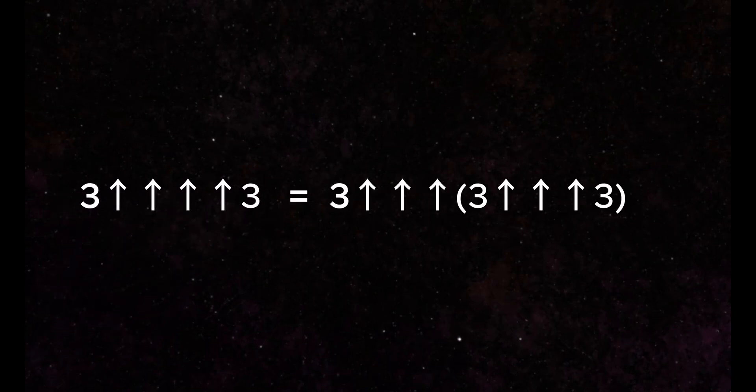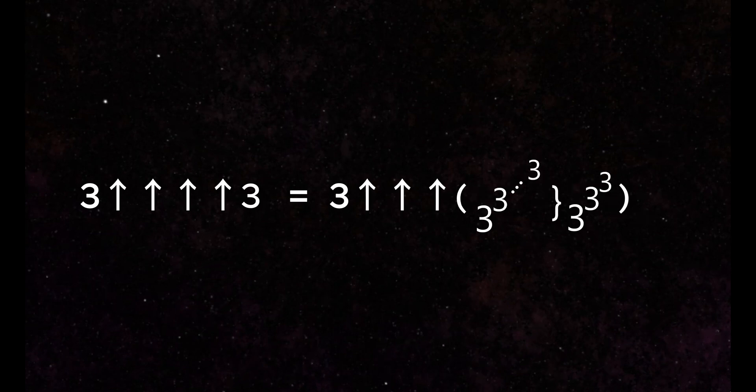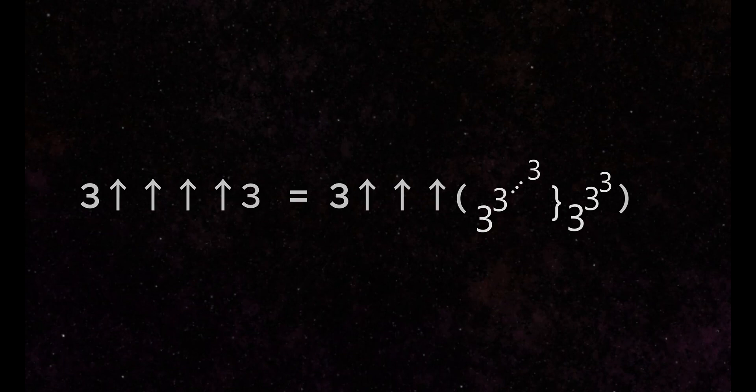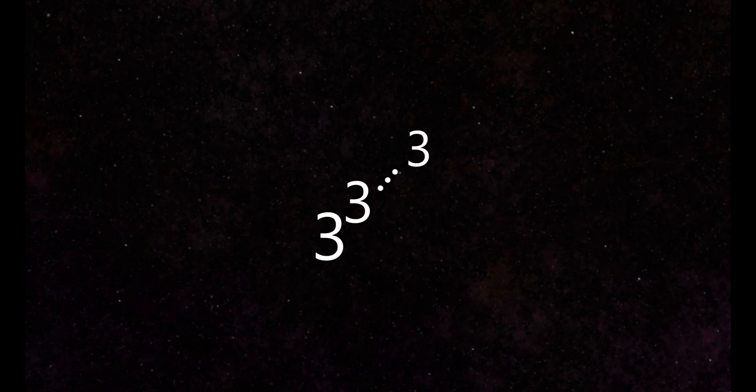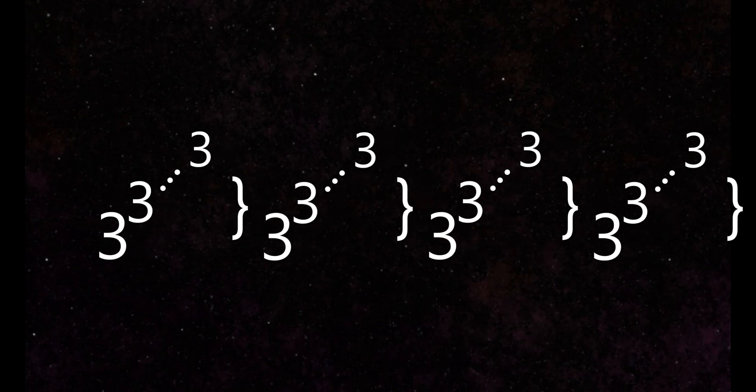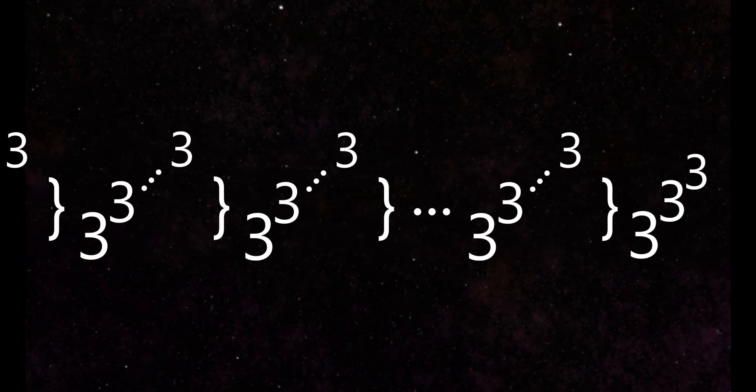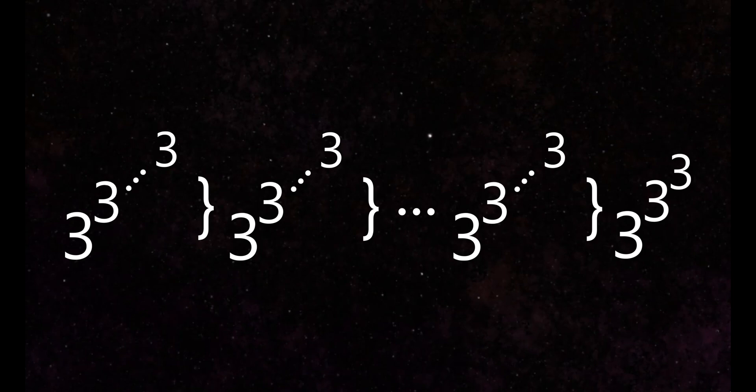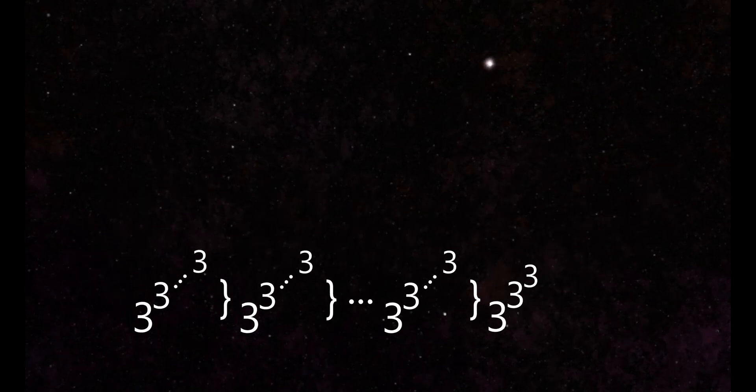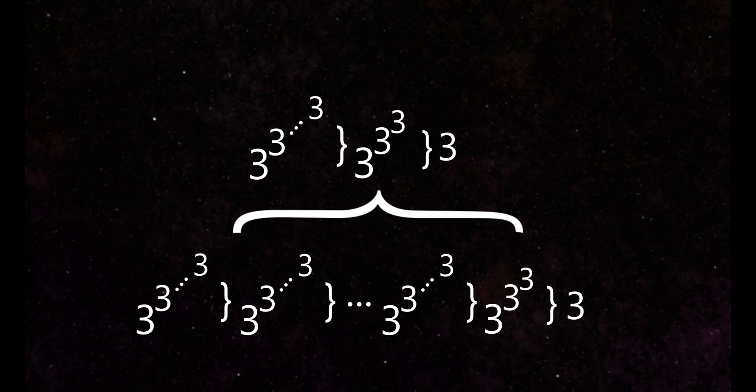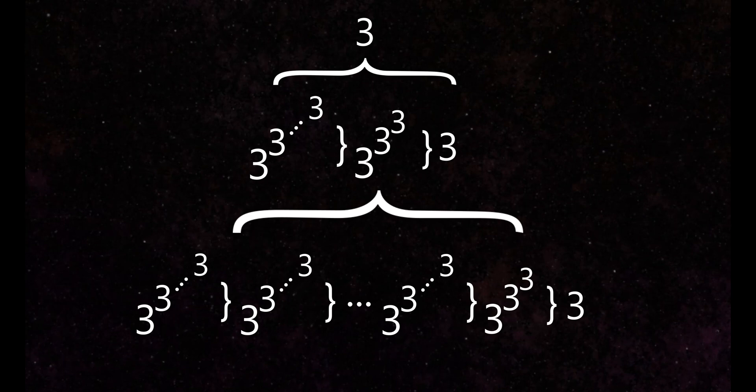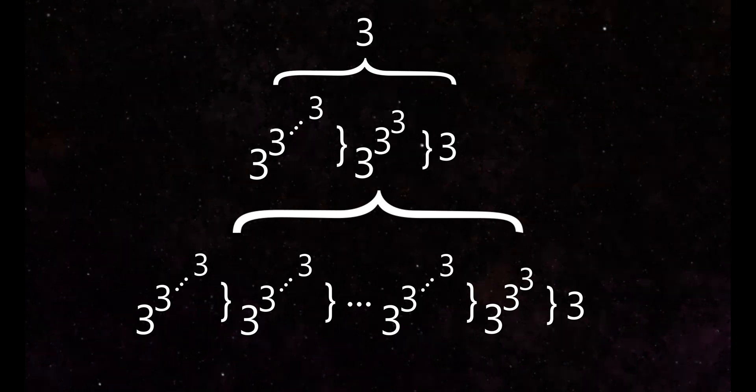3 triple arrow 3 is a stack of threes that is 3 to the 3 to the 3 high. 3 quadruple arrow 3 can be rewritten as 3 triple arrow, and then the number we just described. That means the height of our power tower can be described by another power tower, whose height is described by another power tower, and so on. How many power towers do we have? 3 triple arrow 3, which you'll notice itself has 3 power towers. So each time we add an arrow, we add a new direction of notation that we need to describe how big our original power tower is.